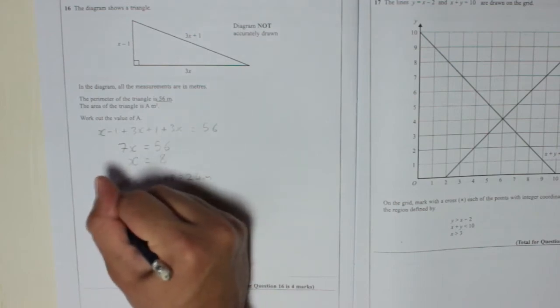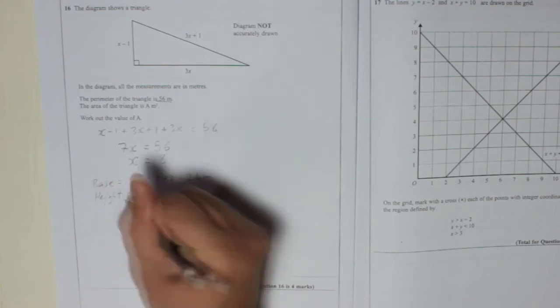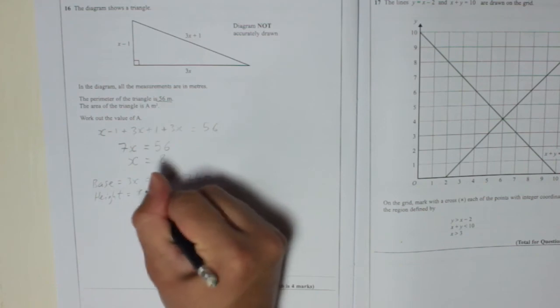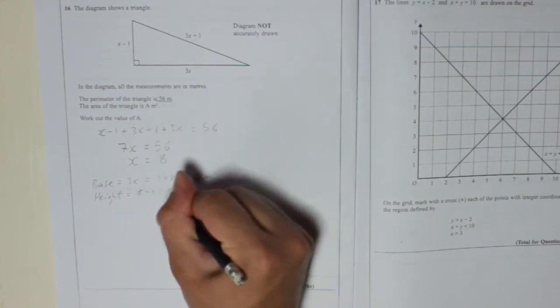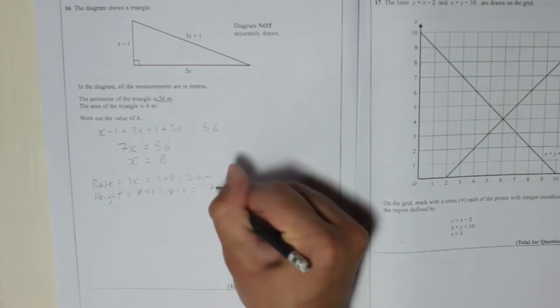And we know that the height is x minus 1, which is 8 minus 1, which is 7 metres.